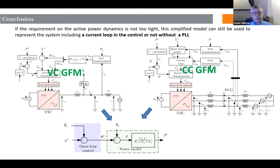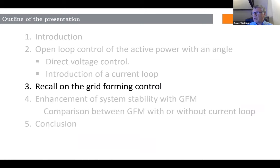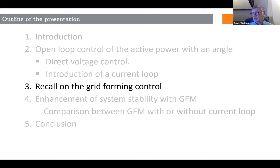We define two types of converter control: voltage-control grid-forming (VCGFM) and current-control grid-forming (CCGFM). We can assimilate the behavior of both systems to this very simple model drawn from the static model of the system. It is not an extremely accurate model obviously, but if we don't move the active power reference too fast, this model is enough, and from it we can derive the controller for the active power.